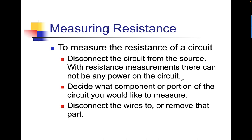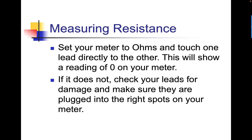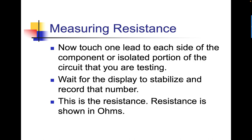To measure resistance of a circuit, this is extremely important: disconnect the circuit from the source. With resistance measurements, you cannot have any power on the circuit — you'll break your meter. Decide what component or portion of the circuit you want to measure. Disconnect the wires to and remove that part. You can only take resistance of components if they're isolated. Set your meter to ohms and touch one lead directly to the other — that should show a reading of zero on your meter. If it doesn't, check your leads for damage and make sure they're plugged into the right spots on your meter.